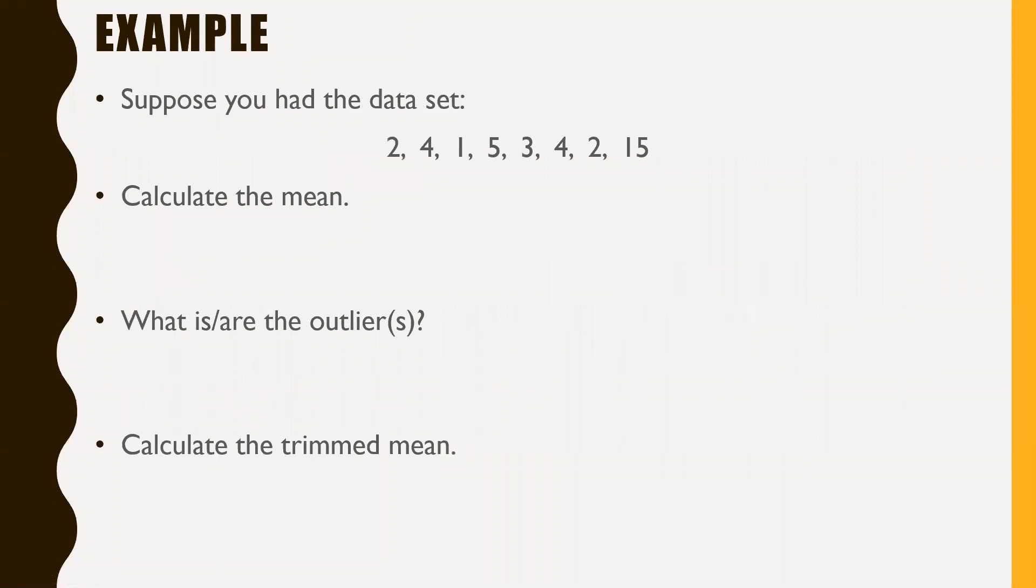Let's do an example. Suppose you had the data set 2, 4, 1, 5, 3, 4, 2, 15. Calculate the mean. To calculate the mean, add all these numbers up and divide by that sum. If we add them up, we get 36. We have eight different numbers, so 36 divided by 8 gives us a mean of 4.5.